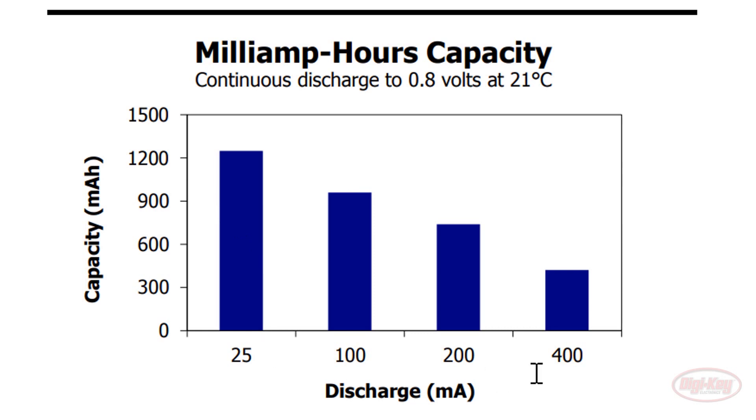However, if we try to crank nearly half an amp out of it, we get maybe a third of the capacity. You'll also note that this particular chart assumes that we're draining the battery to 0.8 volts and gives the capacity just to that point.